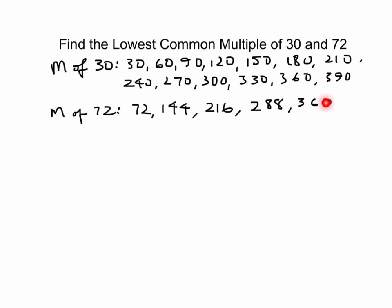So because you want to find the lowest common multiple, all you need to do is find the first number where it's the same. So the lowest common multiple is 360. There you go.